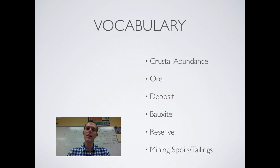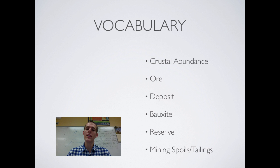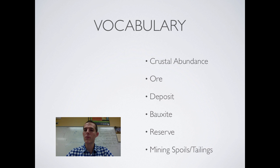A deposit is a concentration of a mineral that miners are seeking — it could be a gold deposit, a coal deposit, or a potassium deposit. When a material is concentrated in one area, that is known as a deposit. One particular type of ore you need to know is bauxite. Bauxite is the ore that contains aluminum, so just jot down bauxite equals aluminum.